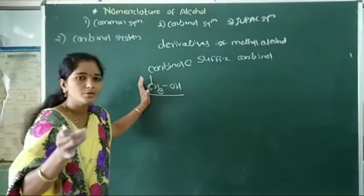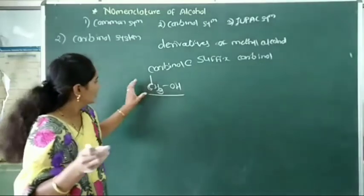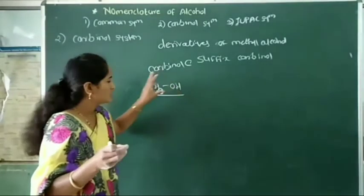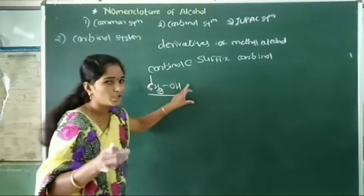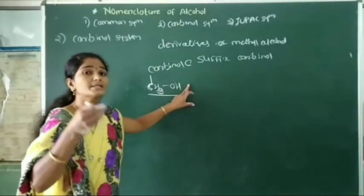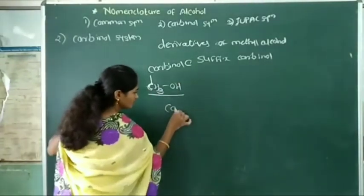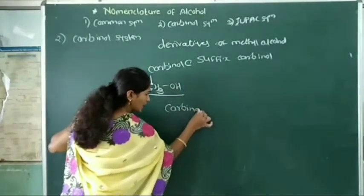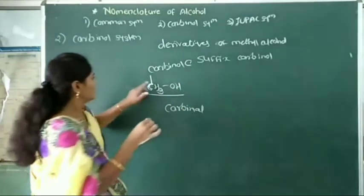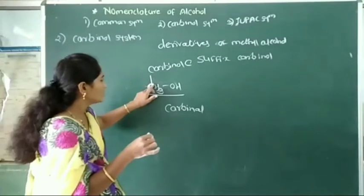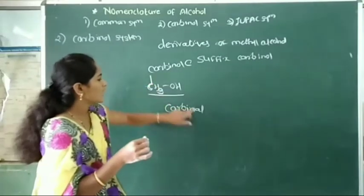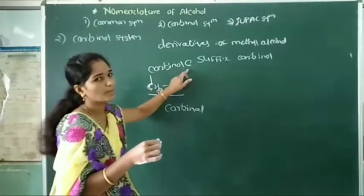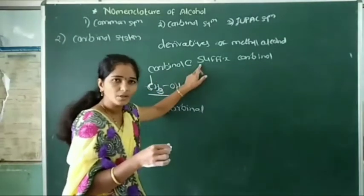In the carbynol system, CH3OH is called as carbynol. And this carbon — the carbon of CH3OH — is called as carbynol carbon.